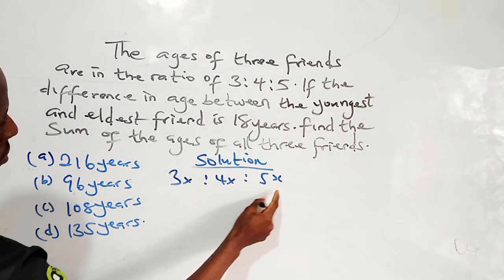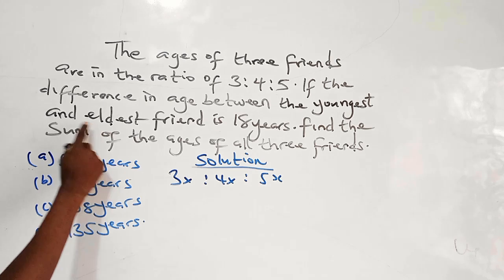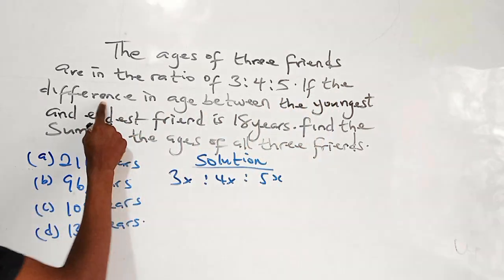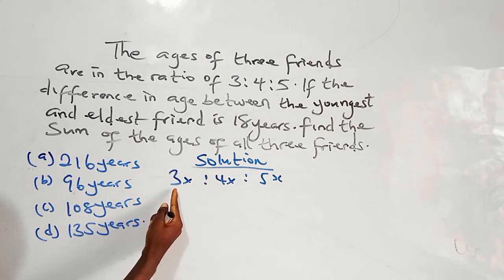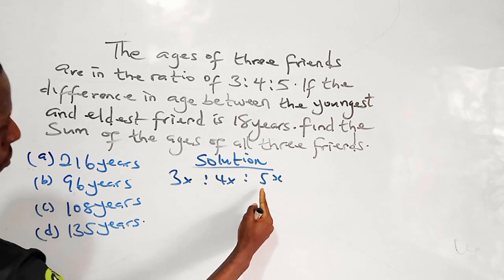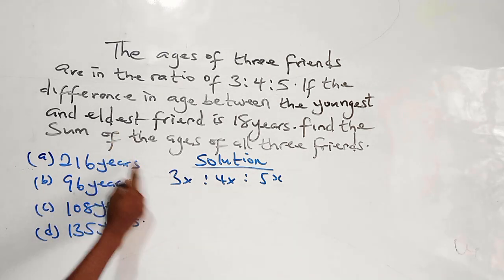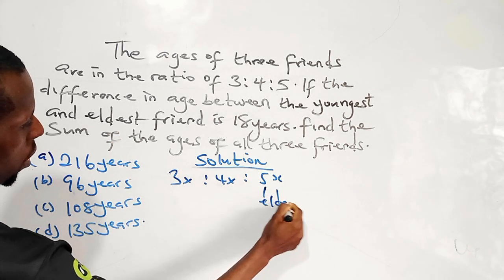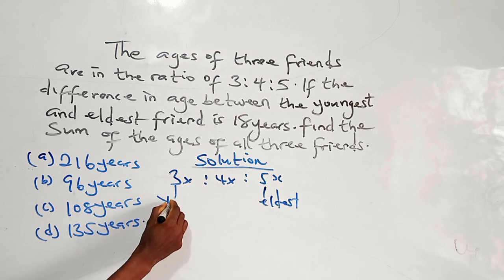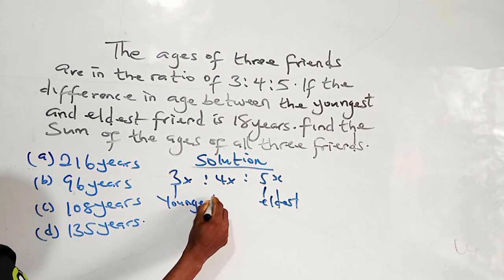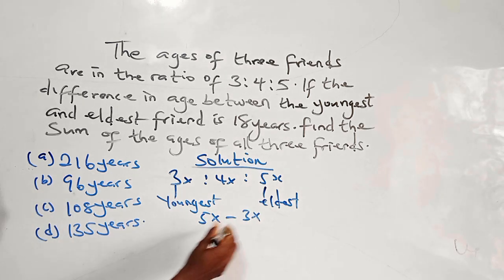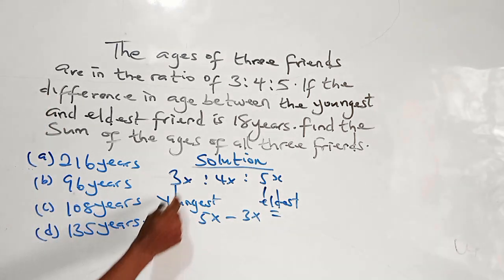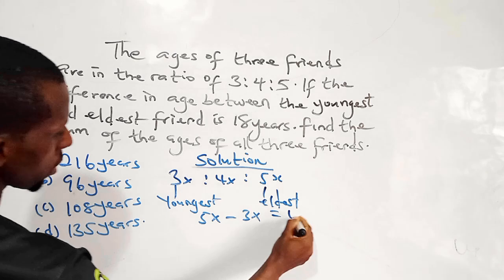But when you look at the question, the question says if the difference in age between the youngest and the eldest. So from here, the youngest should be 3. The eldest friend should be 5. So the difference between the eldest and the youngest will be 5x minus 3x, which equates to 18 years.